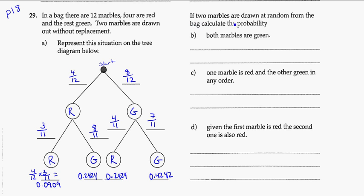So if two marbles are drawn at random from the bag, that's my first and then my second. The probability here that both marbles are green. So we have one way to make that happen, green and then green. We've got my probability. It's going to be 0.4242.